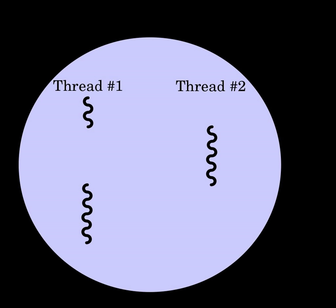On a multiprocessor or multi-core system, multiple threads can execute in parallel, with every processor or core executing a separate thread simultaneously. On a processor or core with hardware threads, separate software threads can also be executed concurrently by separate hardware threads.